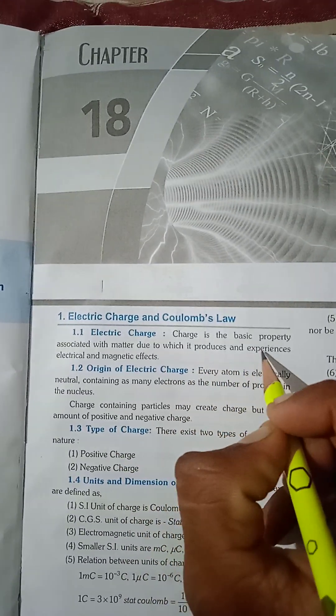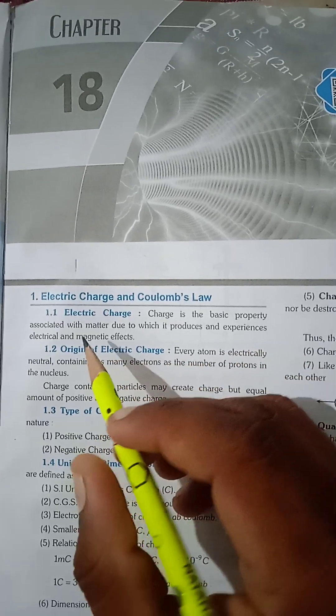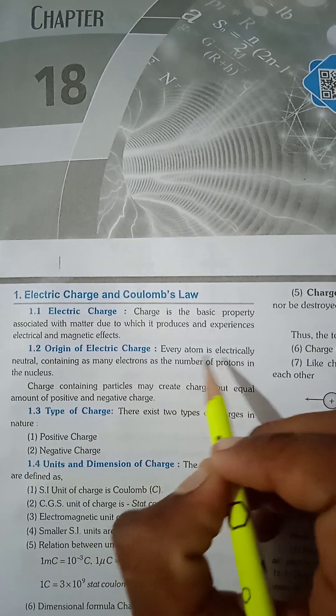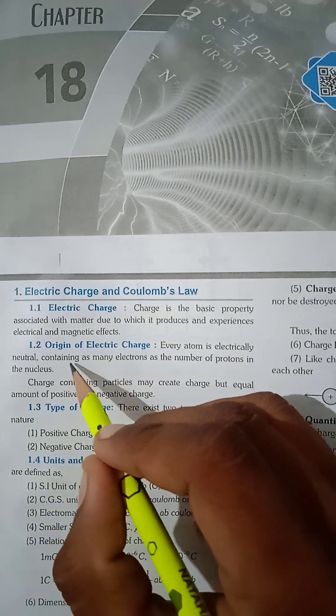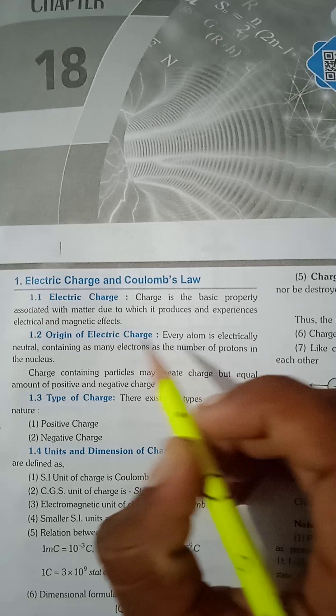Origin of Electric Charge: Every atom is electrically neutral, containing as many electrons as the number of protons in the nucleus.